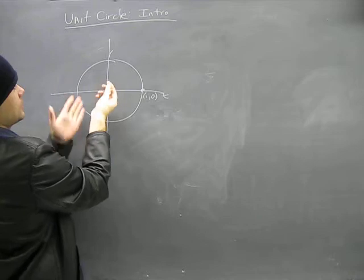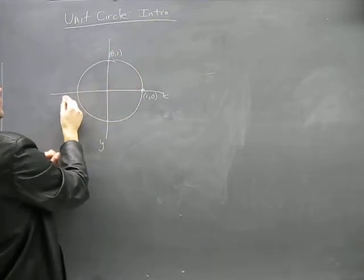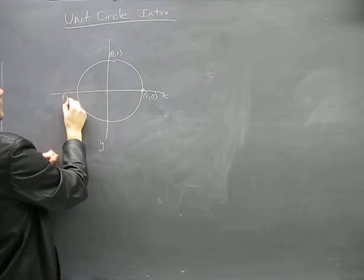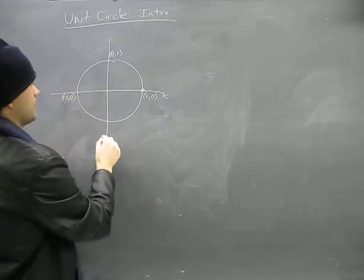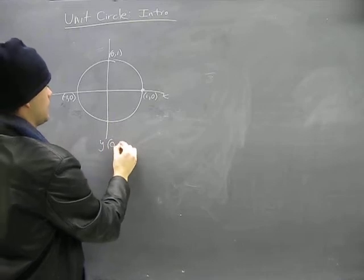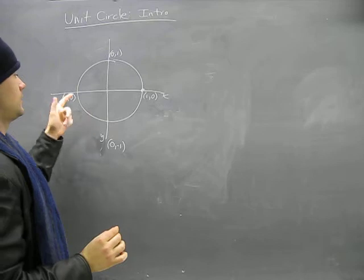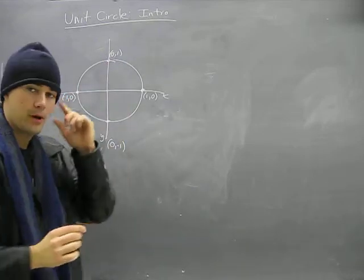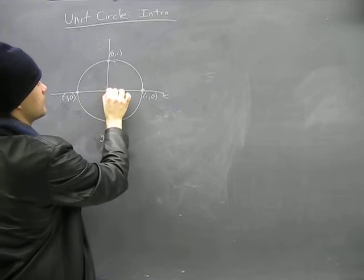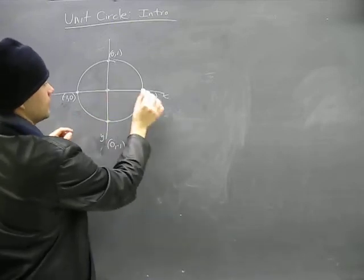And then here, x value zero height of one, and this would be x of negative one, and this would be zero negative one. So that's the y axis here. These are the points of the unit circle on here. And what that tells us, should remind us, that from the center, which is (0,0), to the edge is the distance of one unit.